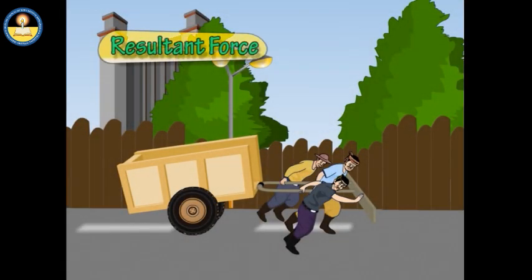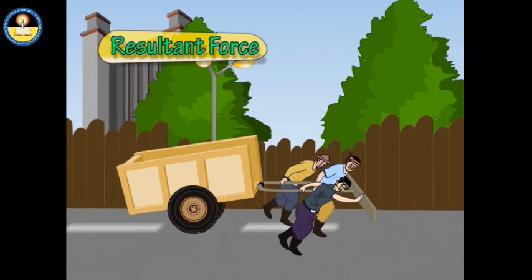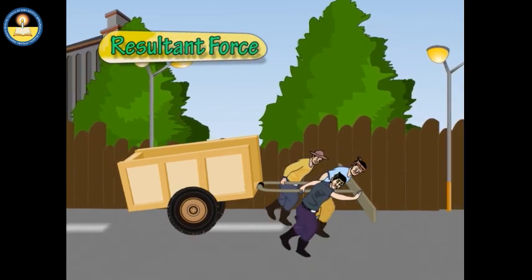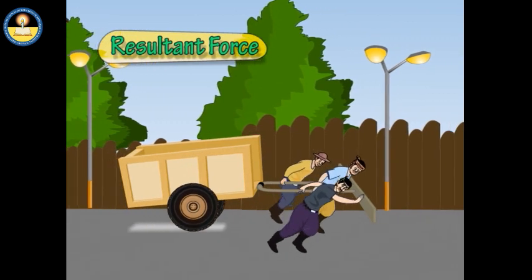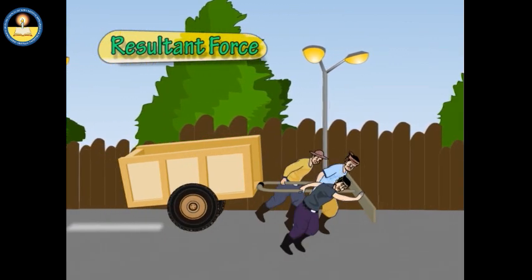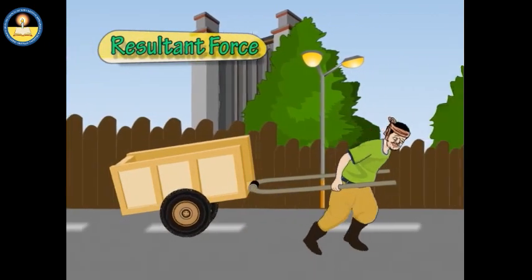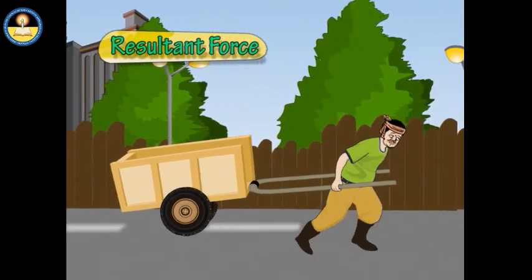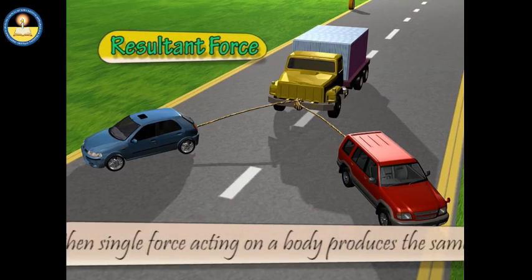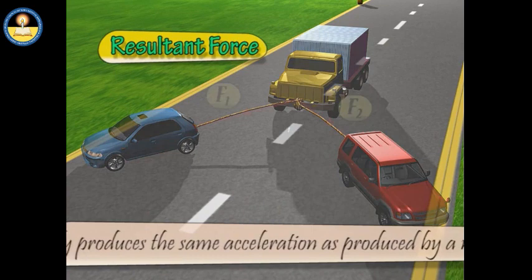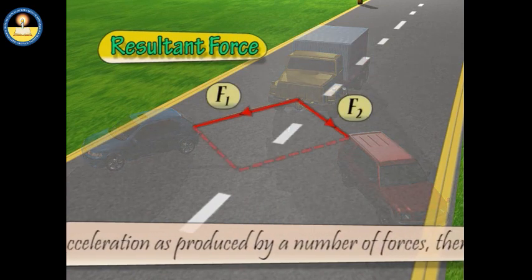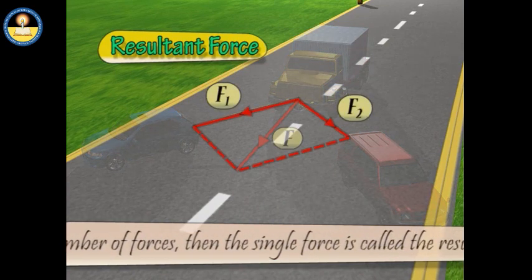Many forces can act on a body simultaneously. For example, several persons may jointly make an effort to move a heavy cart — each person applies a force, and together they produce acceleration. However, the same acceleration can be achieved if a stronger man pulls the cart hard enough. When a single force produces the same acceleration as a number of forces, it is called the resultant force.